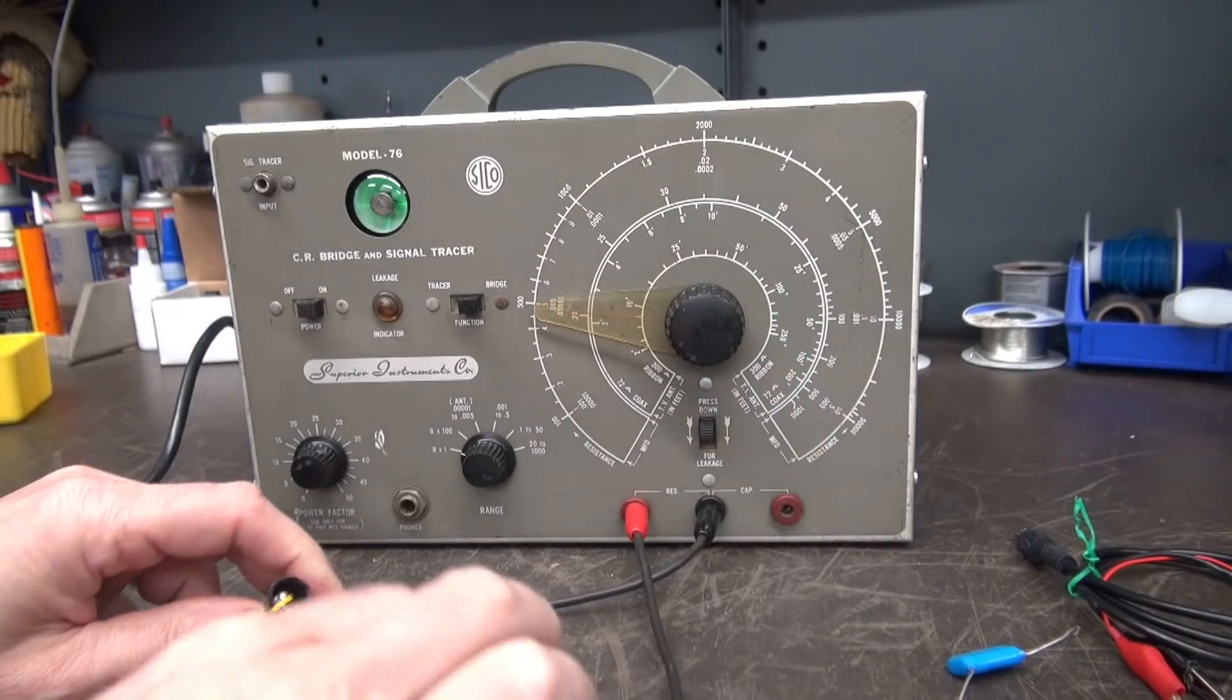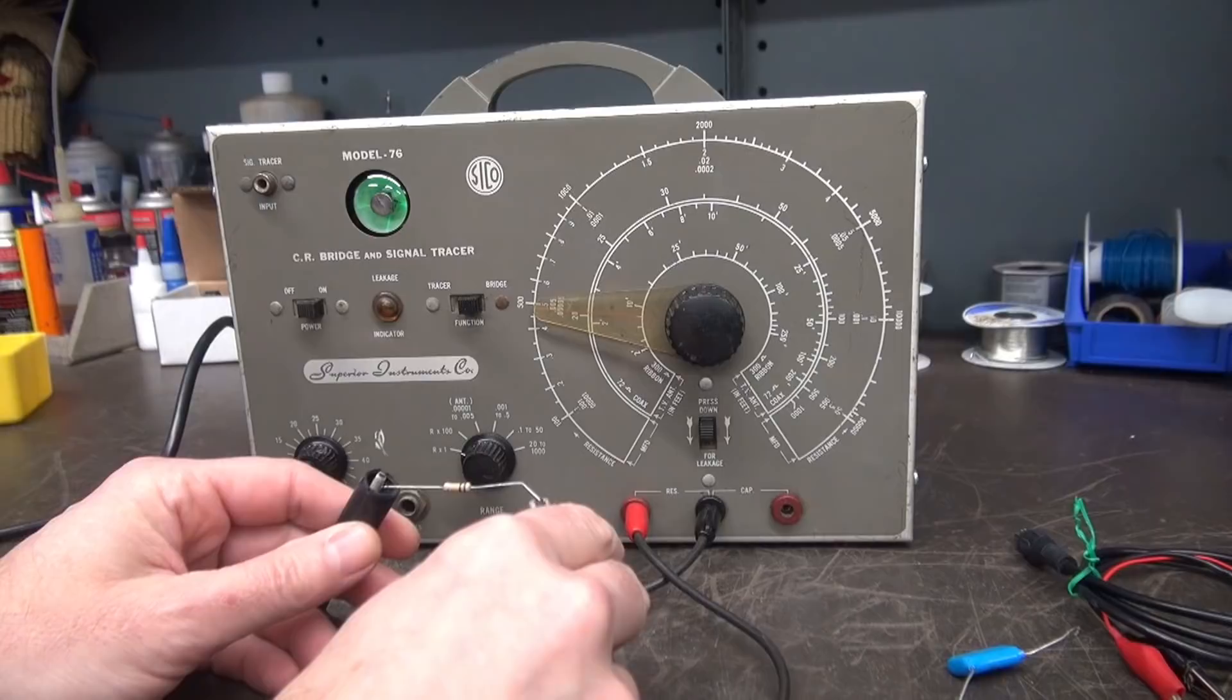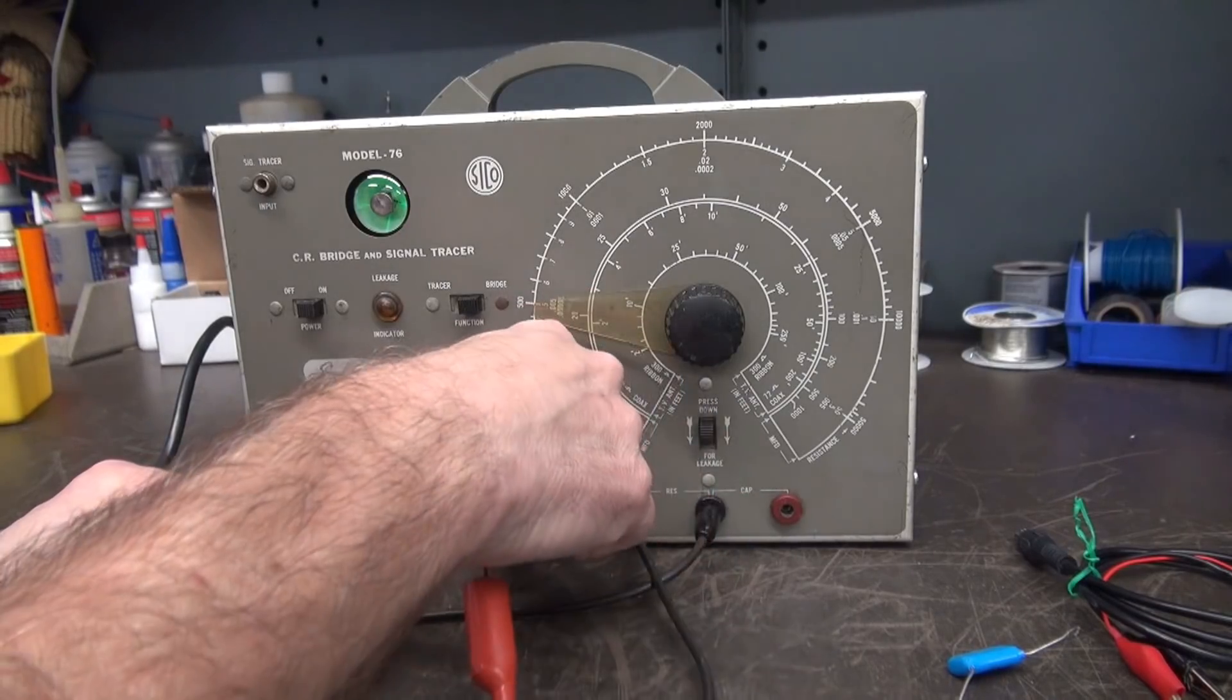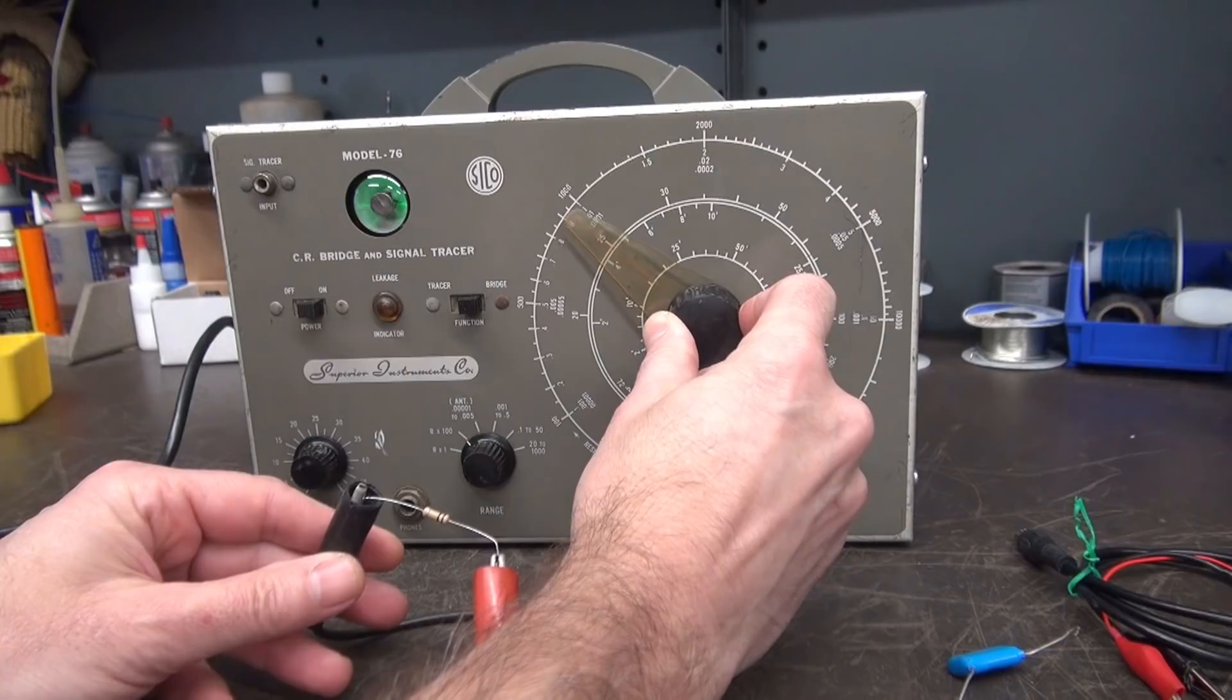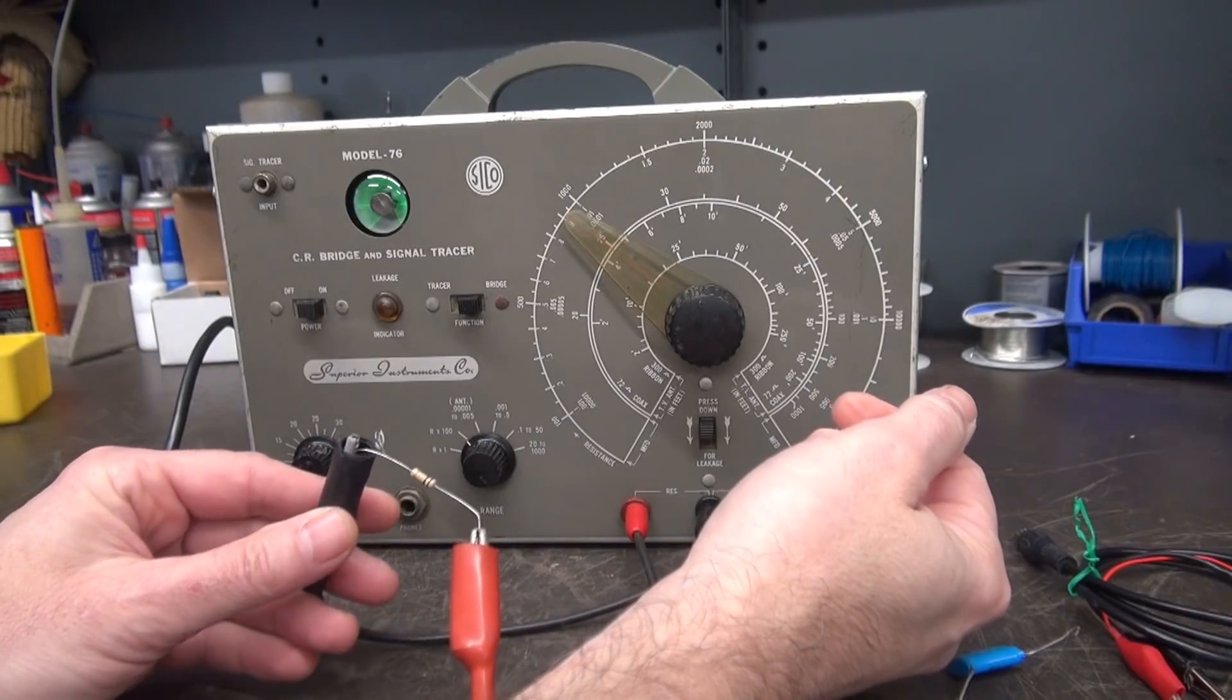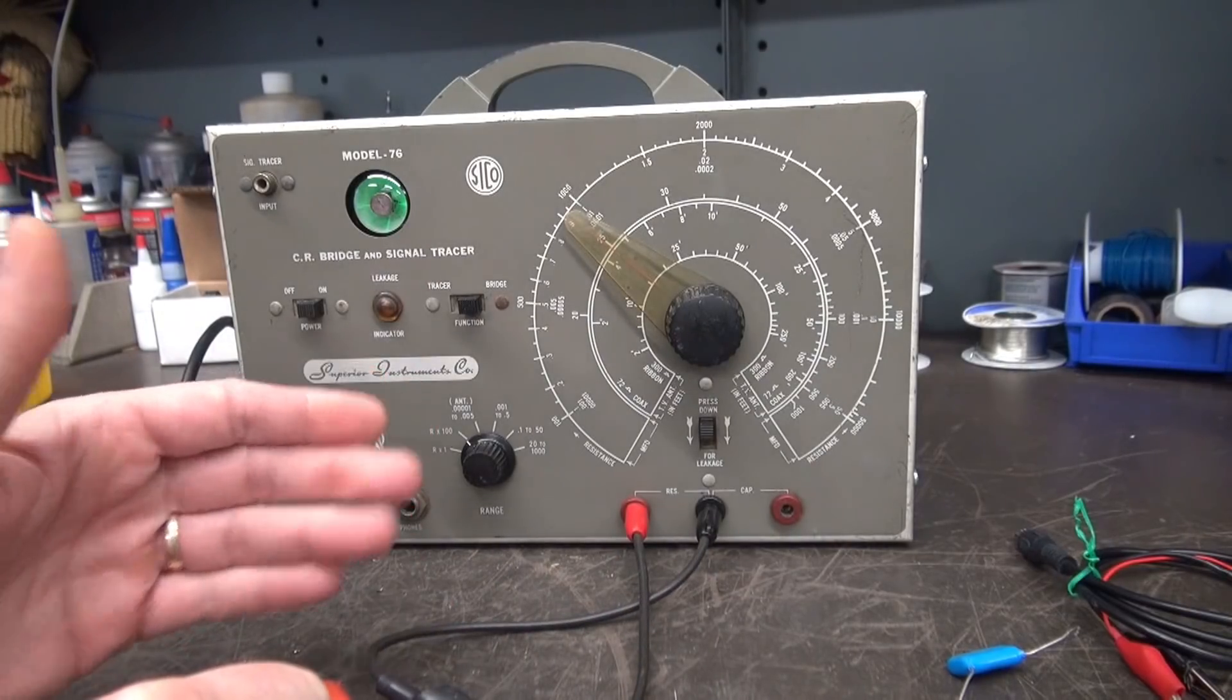Now, if I wanted to check a higher value resistor. Got a 100k resistor here. Put that guy up. Now, we're going to go to R times 100. So, it should be right up in this area, right? There it is. A little under what I'd expect. This is a 5 percent resistor. So, calibrations are not perfect, but you get the idea. The bridge is operational.